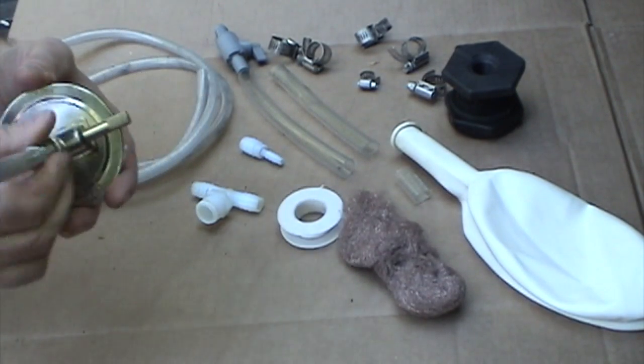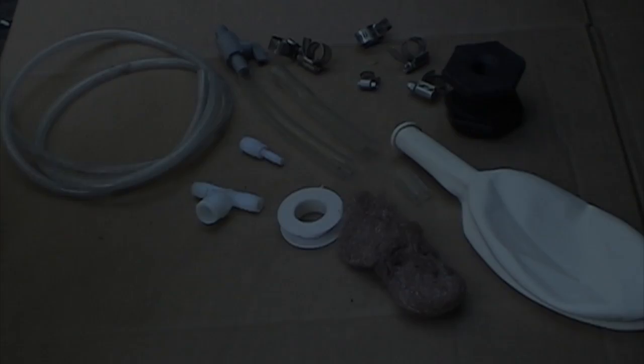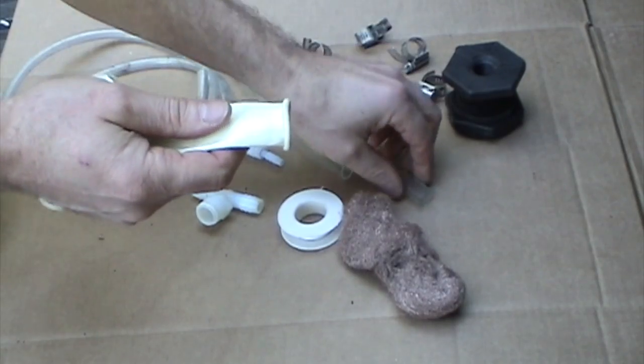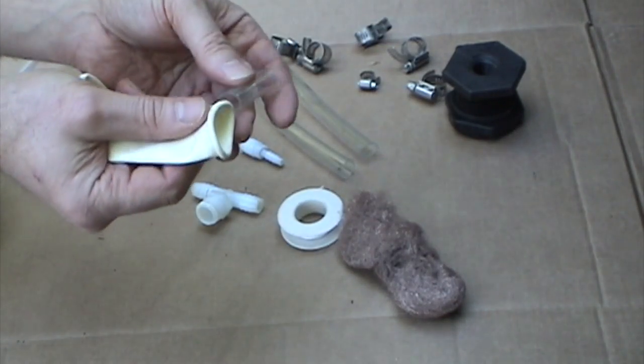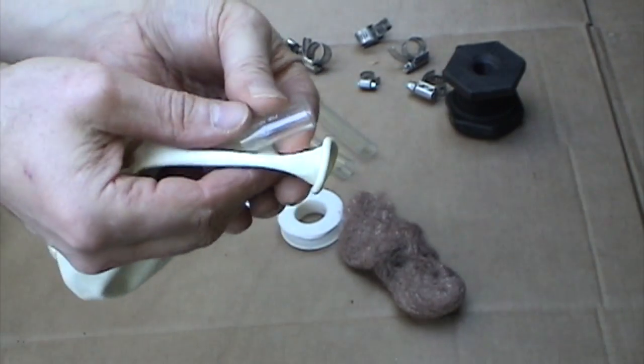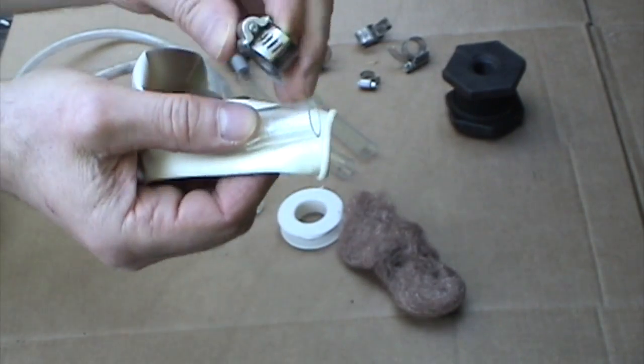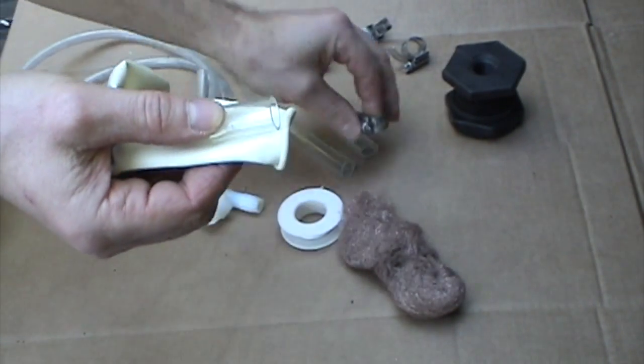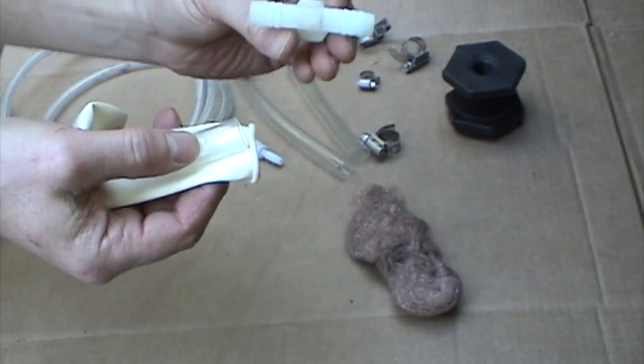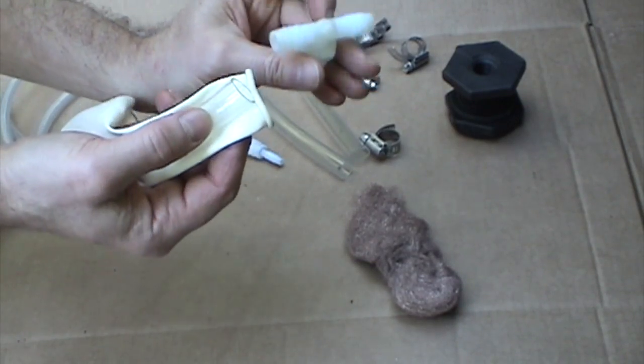So that's it for the major parts. Let's put it together. We're going to start with the balloon assembly. We want to poke the balloon through this hose as a gasket to protect it from the pressure of the hose clamp.